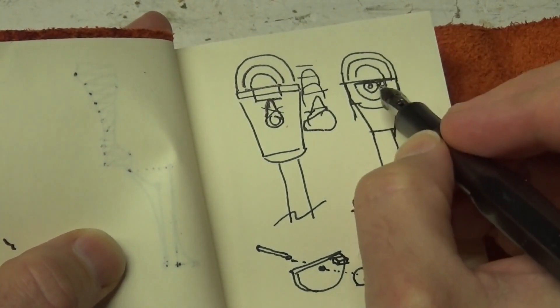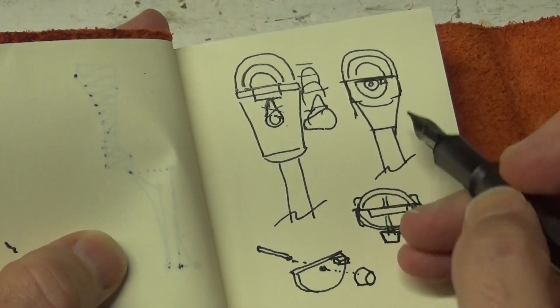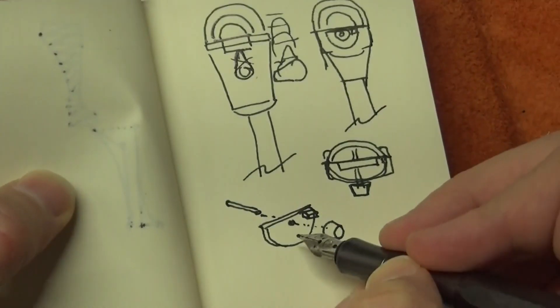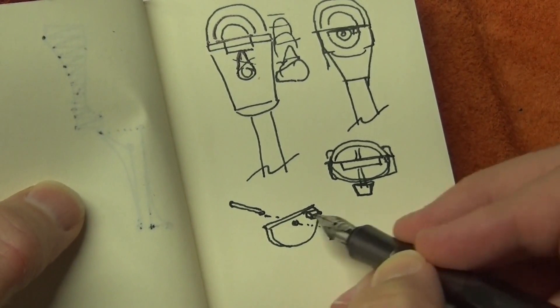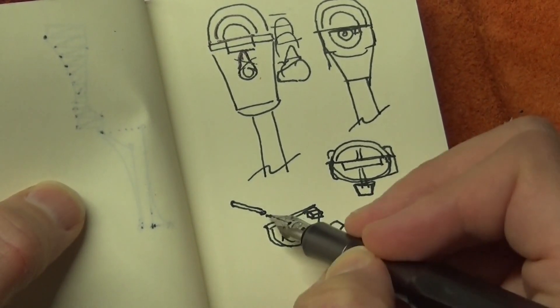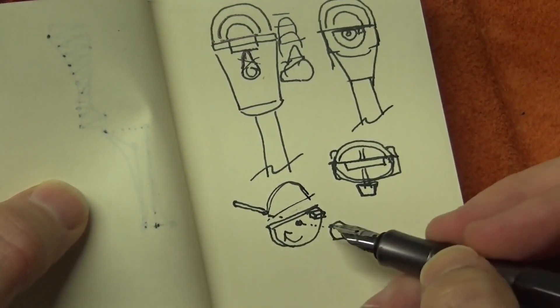So then I thought I could simplify it further by just having a single piece that rotates directly. So, kind of this shape you see here with like a half disc that rotates up. But even that seemed a little much.